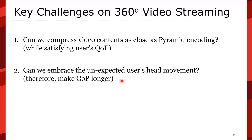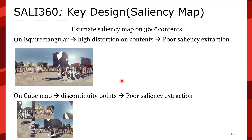This is our key design — we call it the saliency map. We want to estimate a saliency map on 360 contents. Starting from equirectangular content, which has high distortion, it is hard to make precise saliency extraction. On the cube map, there are discontinuity points at the edges, resulting in poor saliency extraction. If we process it small section by face, there is no understanding across boundaries, which also results in poor saliency extraction.